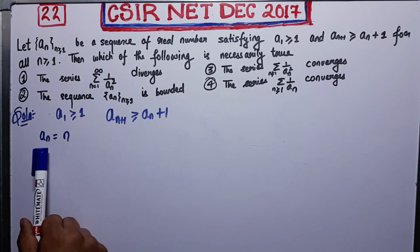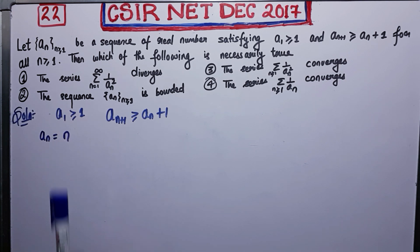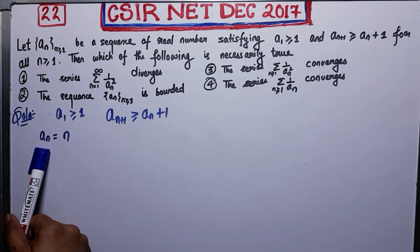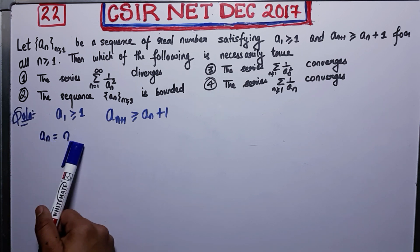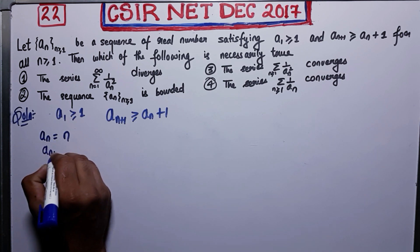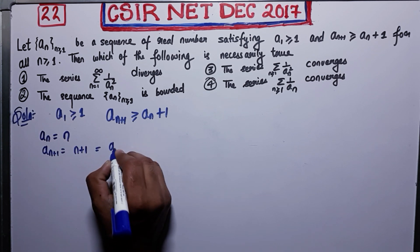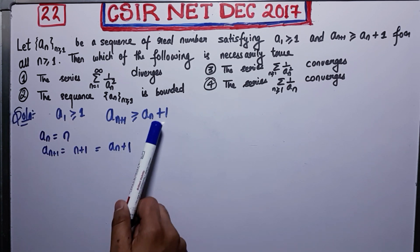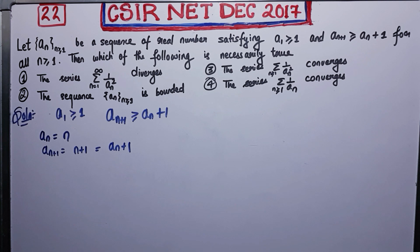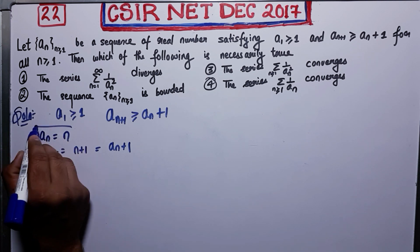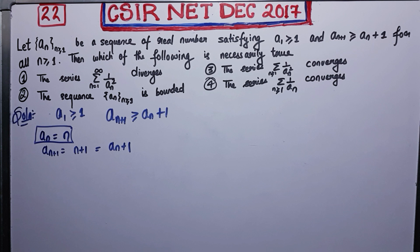See, a_1 = 1, so the first condition is satisfied. Also, a_{n+1} = n+1, which equals a_n + 1, so the second condition is also satisfied. This sequence satisfies all the hypotheses, so we can use it for this question.